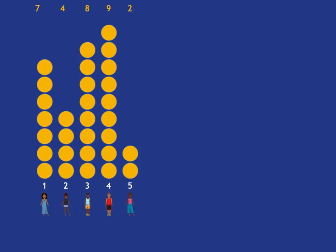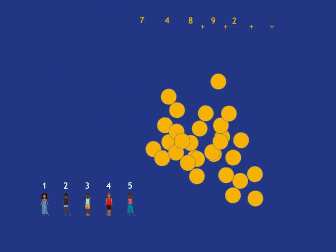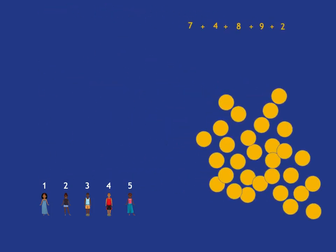What you're going to do when you work out the mean of the number of coins is you are going to pretend that we live in a fair world where everybody has the same number of coins. And so what we do is we take all the coins and we put them together. And in that big pile, then we can add up and see that we have 30 coins.